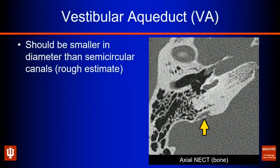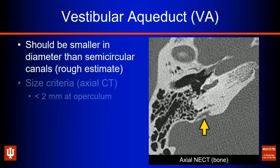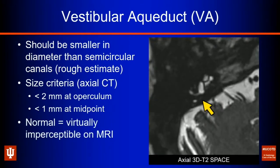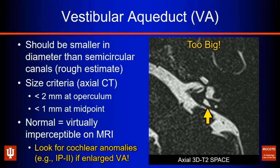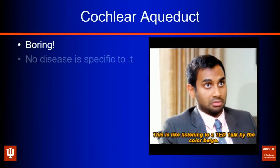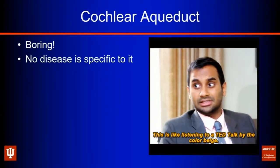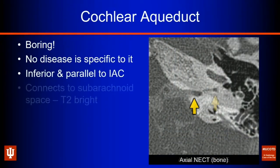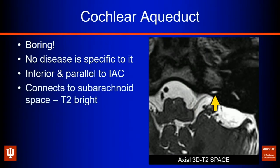The vestibular aqueduct can be seen readily on CT at the operculum — it should be small, smaller than a semicircular canal, less than 2 millimeters at the operculum, and less than 1 millimeter at its midpoint. On MRI, normally you may see just a little bit of increased T2 signal. When it's too large, look for associated inner ear abnormalities — specifically an IP2 or incomplete partition type 2 defect. The cochlear aqueduct has no intrinsic disease pathology; it sits inferior to and parallels the internal auditory canal, connecting out to the subarachnoid space and tends to be very bright on T2-weighted imaging.